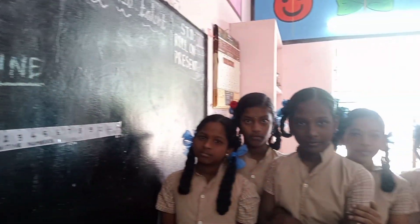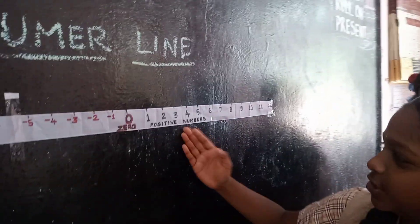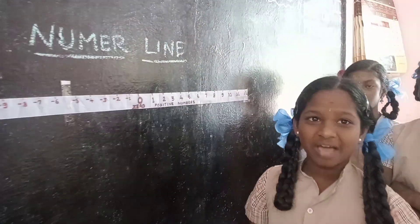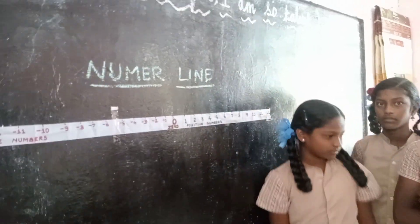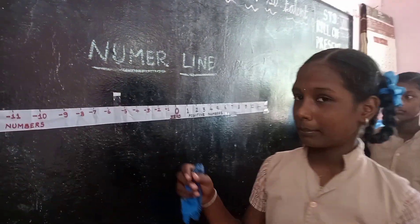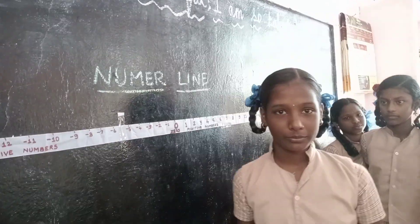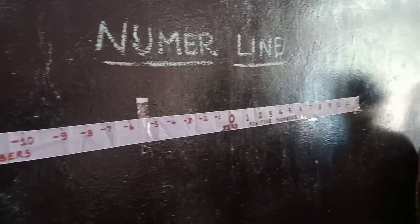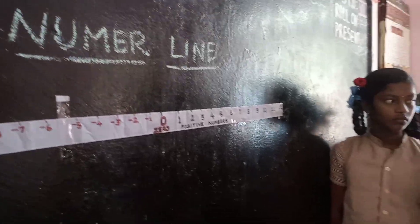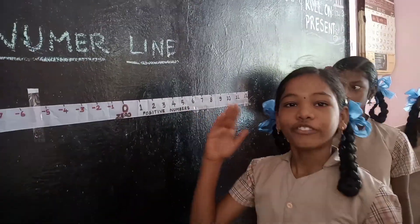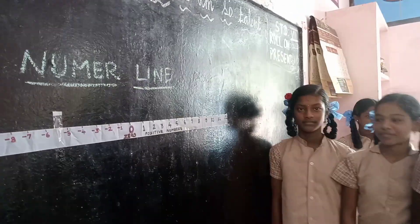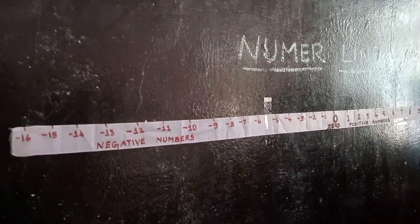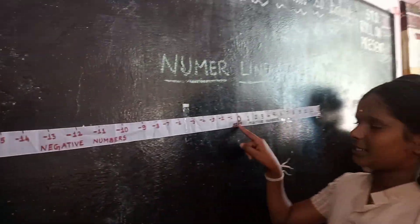Very good. Then what are positive numbers? Positive numbers are numbers having greater value than zero. Yes, very good. What are negative numbers? Negative numbers are numbers having lesser value than zero. Yes, very good. Where are the positive numbers represented on the number line? To the right of zero. Yes, very good. Where are the negative numbers represented on the number line? To the left of zero.